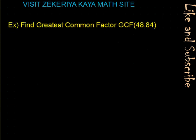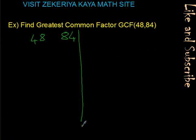Let's do a few examples. Find the greatest common factor of 48 and 84. You can pause the video and try it yourself. We write the numbers next to each other and draw a line. We start dividing by 2: 48 divided by 2 makes 24, and 84 divided by 2 makes 42. We divided both numbers, so we sign this 2.